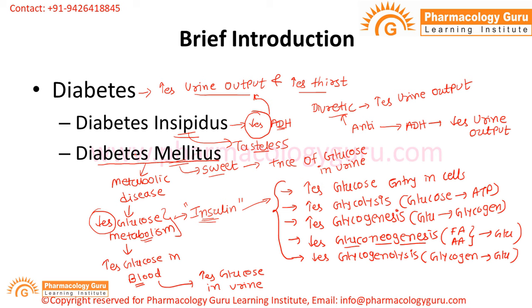Diabetes mellitus is actually a metabolic problem — a problem with glucose metabolism — which is impaired because of either the deficiency of insulin or a defect in insulin activity. While diabetes insipidus is caused by the deficiency of the posterior pituitary hormone vasopressin, or ADH. Diabetes mellitus also has two subtypes.